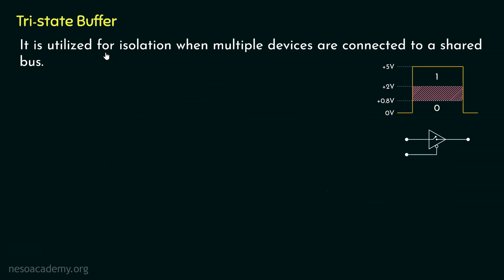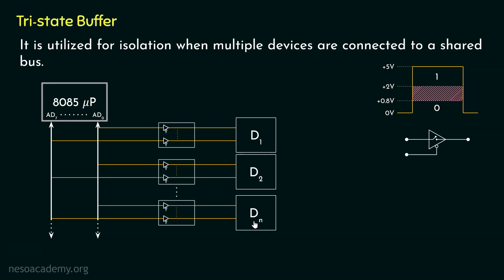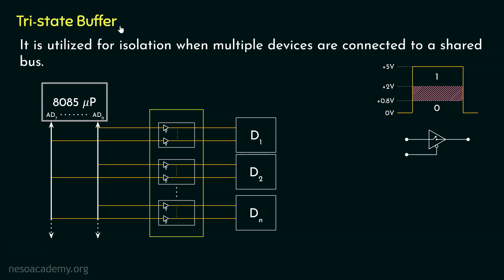Now let me show you how the tri-state buffer is utilized for isolation when multiple devices are connected to a shared bus. Say multiple devices — Device 1, Device 2, Device N — are connected to the microprocessor via the data line, and all of them are connected using tri-state buffers. When Device 1 wants to communicate with the 8085 microprocessor, the enable input of its tri-state buffer will be reset to zero. At the same time, for all the other devices, the enable input will be set to one, inactivating all their communication channels. For that time, only Device 1 can communicate with the microprocessor, and this is how tri-state buffer provides isolation on a shared bus.